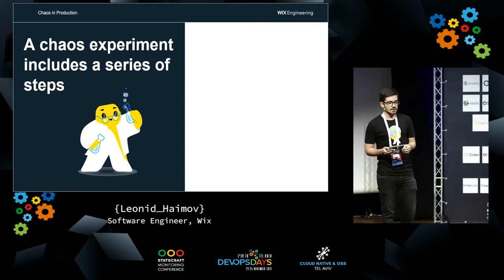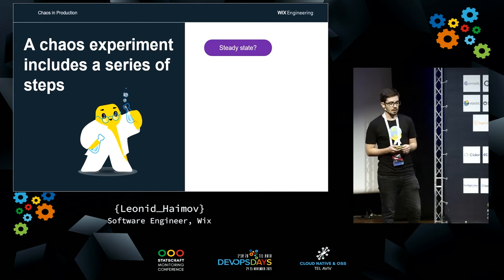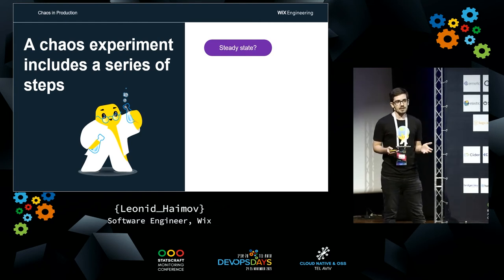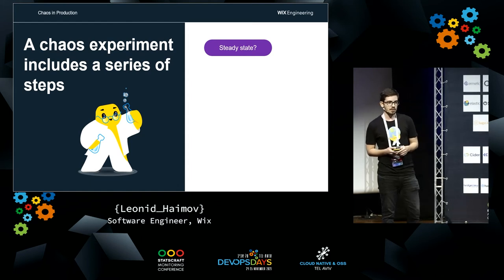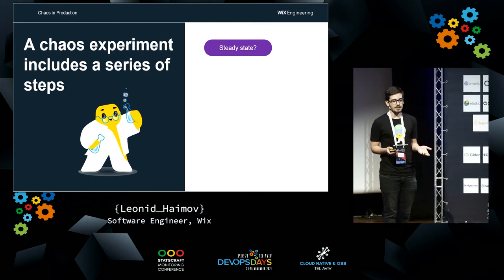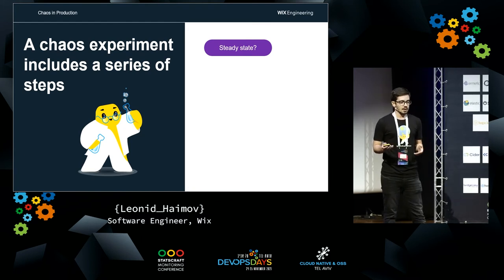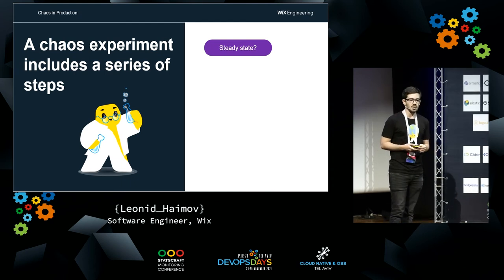After that, we need to define a steady state. A steady state is a set of probes or functions that check that your system is currently steady. In our case, having 10 servers up and running could be a steady state. Additionally, we could have metrics like error rate, and we would expect zero or a very low amount of errors.